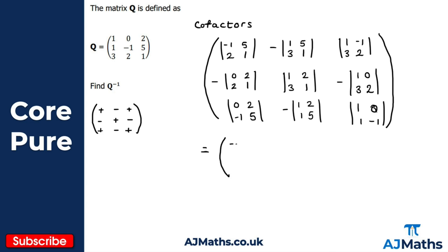Evaluating all nine 2x2 determinants, the cofactor matrix for Q is: top row: −11, 14, 5; middle row: 4, −5, −2; bottom row: 2, −3, −1.